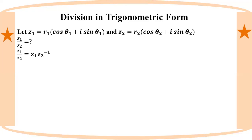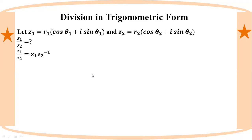Now we are going to say: how does z1 relate to x minus theta? How does z2 inverse relate to x minus theta? z2 inverse equals 1 by r2 times cos(minus theta 2) plus i·sin(minus theta 2).